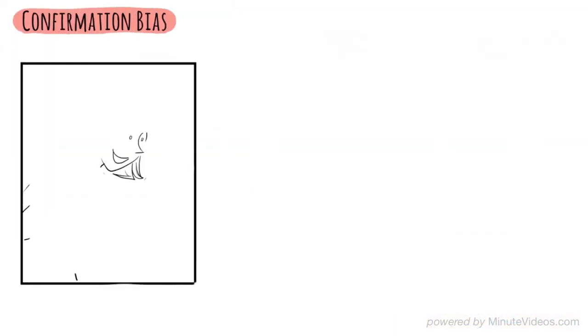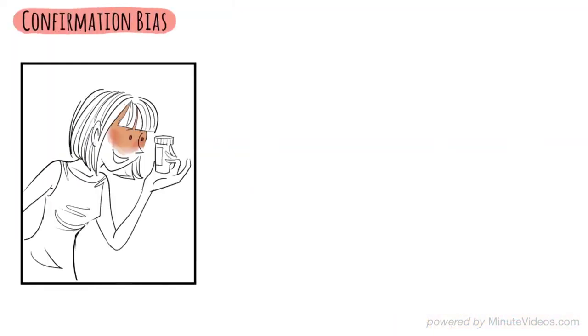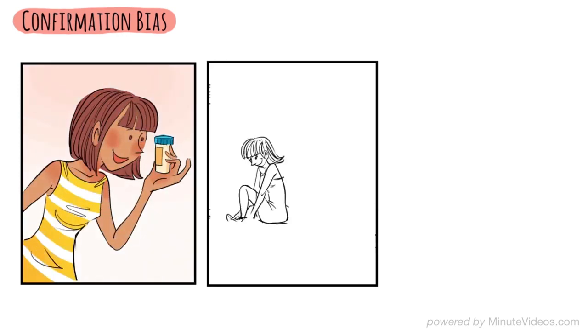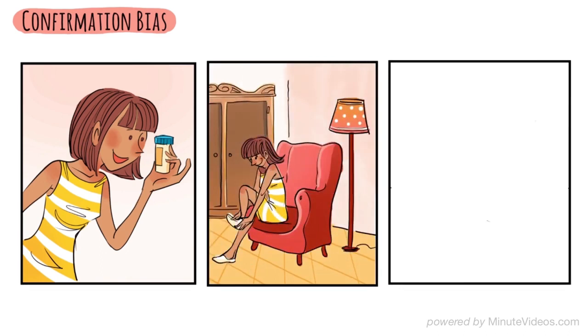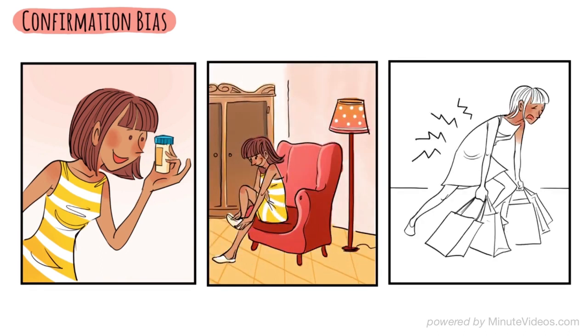And there is confirmation bias. As soon as Mrs. Martin takes the sugar pill, she thinks she will feel better. Then, she focuses only on the things that confirm that she is better. She doesn't realize that she still has trouble doing many other things. While all three ideas probably work together, there is another theory.